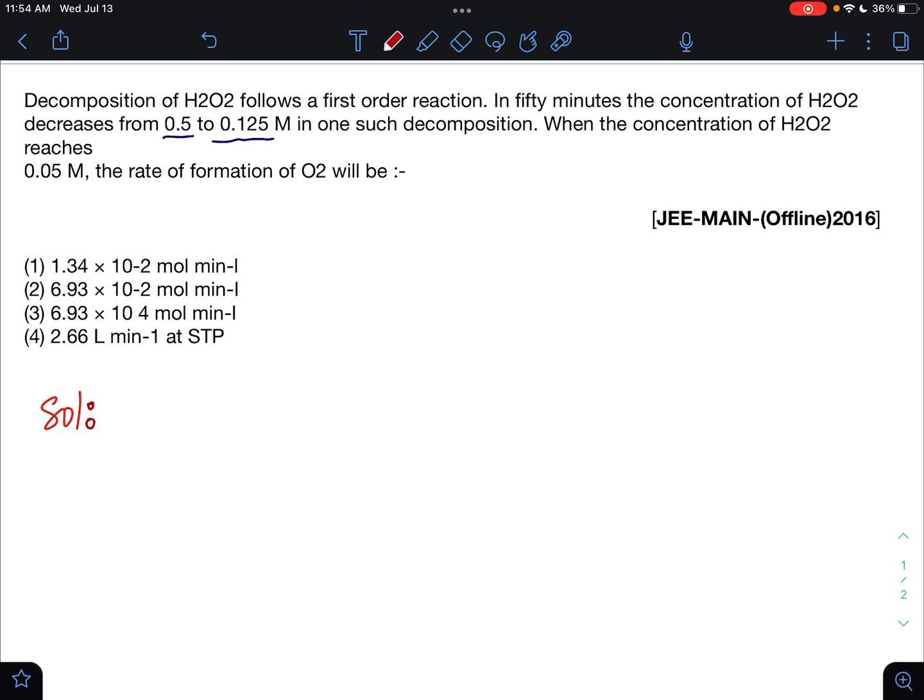The question is: decomposition of H2O2 follows a first order reaction. In 55 minutes the concentration of H2O2 decreases from 0.5 molar to 0.125 molar in one such decomposition. When the concentration of H2O2 reaches 0.05 molar, the rate of formation of O2 will be.